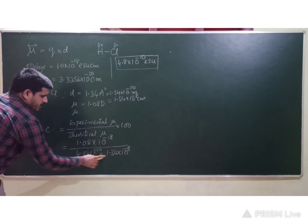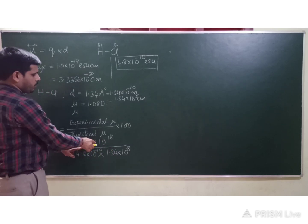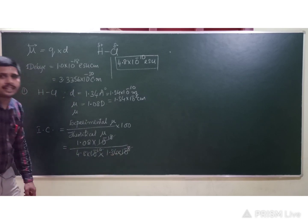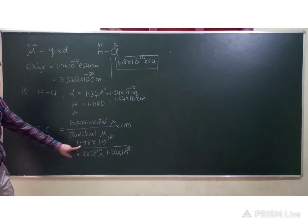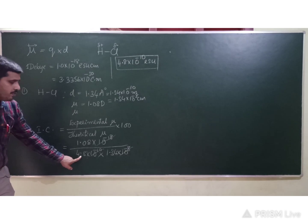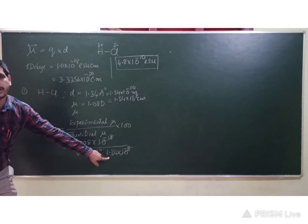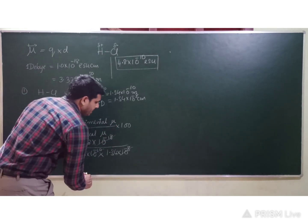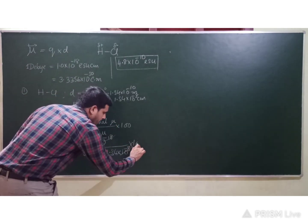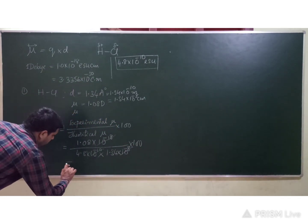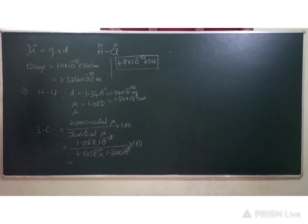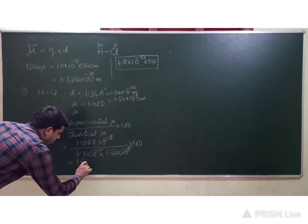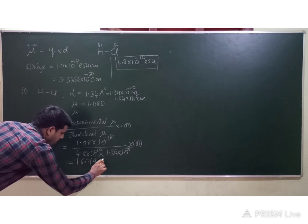Multiplying: 4.8 × 1.34 = 6.432, and 10⁻¹⁰ × 10⁻⁸ = 10⁻¹⁸, so theoretical μ = 6.432 × 10⁻¹⁸ esu·cm. Then IC = (1.08 × 10⁻¹⁸) / (6.432 × 10⁻¹⁸) × 100. The 10⁻¹⁸ terms cancel, giving 1.08 / (4.8 × 1.34) × 100 = 1.08 / 6.432 × 100 ≈ 16.79%.